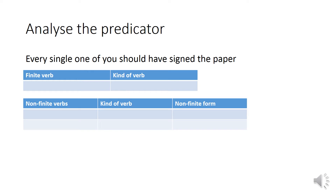But before we do that, I'd like to talk for a little bit about the predicator and how you can label the different kinds of verbs. This is just a repetition from Syntax 1. Look at this sentence: 'Every single one of you should have signed the paper.' The predicator here is 'should have signed'. Pause this video and try to label all the different verbs in that predicator.